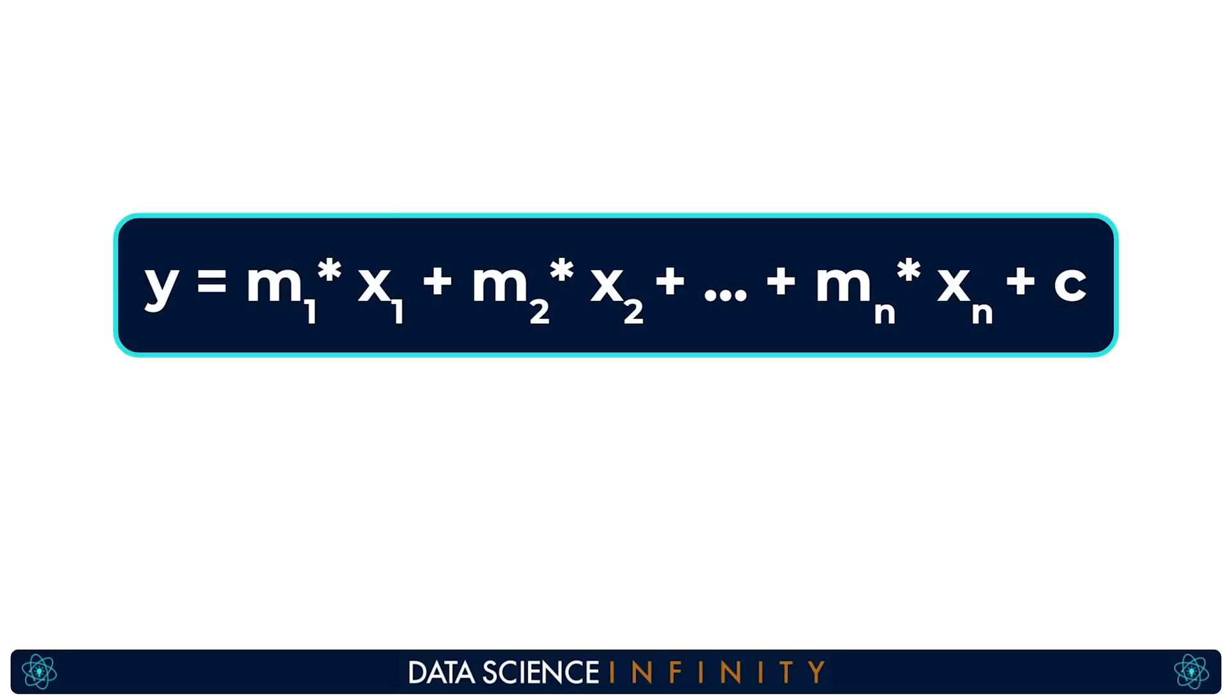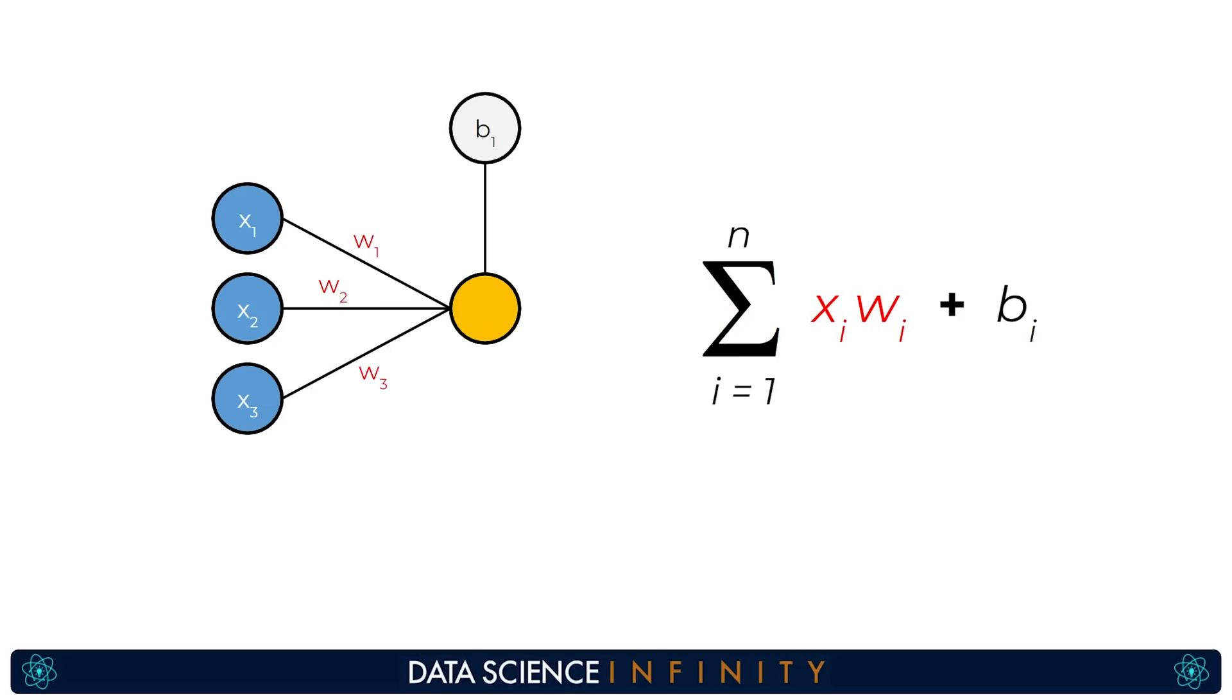Our formula is saying for each input value so from x1 through to xn in our case x3 as we have three inputs multiply that input value by its corresponding weight value. So here we would be calculating x1 multiplied by w1 x2 multiplied by w2 and x3 multiplied by w3. Once those calculations have been done that big sigma sign which looks like a fancy e is telling us to sum all of those results up. After we've done that we add our bias value and voila we have our neurons initial value.